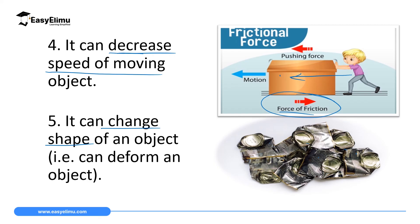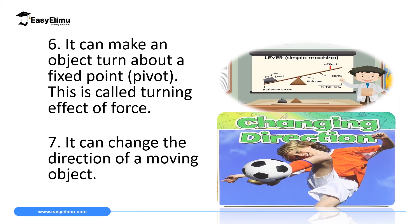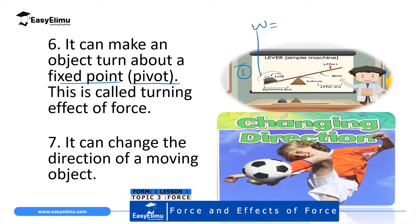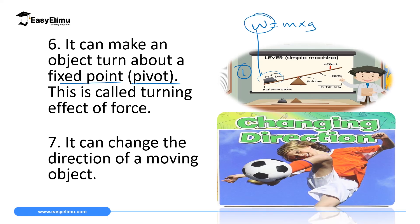Another effect of force is that it can make an object turn about a fixed point, which we call the pivot. As you can see on the screen, there is a fulcrum — the pivot — and the load has weight. Weight, calculated as mass times gravity, is a good example of a force. It has caused the beam to turn, producing a turning effect. The turning effect of a force is a topic we will discuss in Form Two.